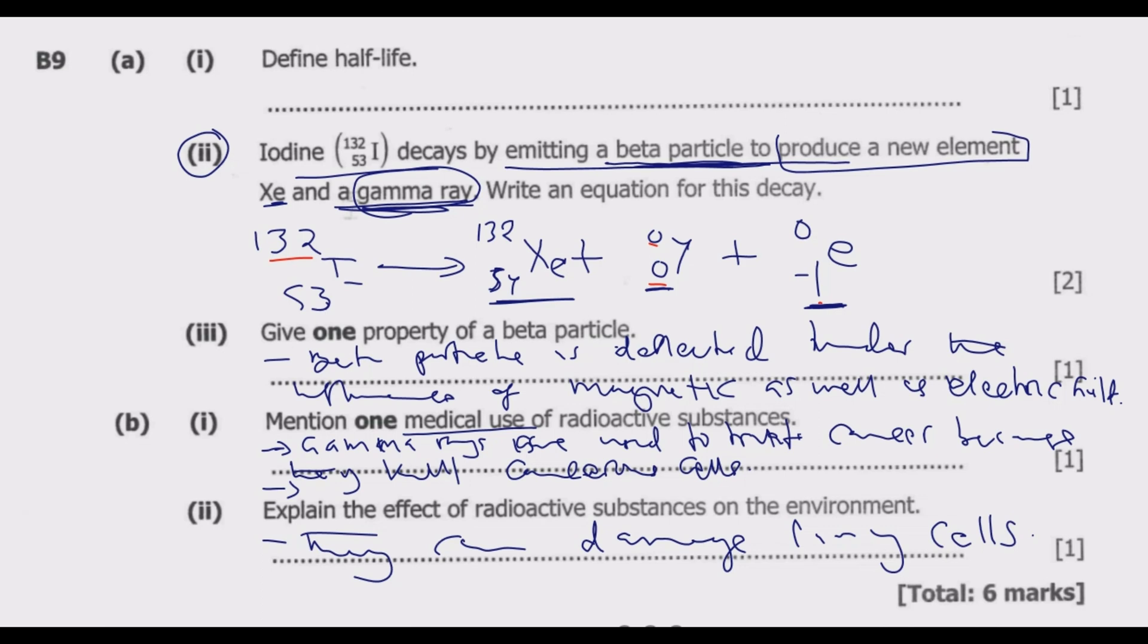Also, they can cause genetic change to living cells. Then also radiation can cause burn. So they can destroy the environment by causing burn. So basically, this is how you answer question 9 to get the optimal max.